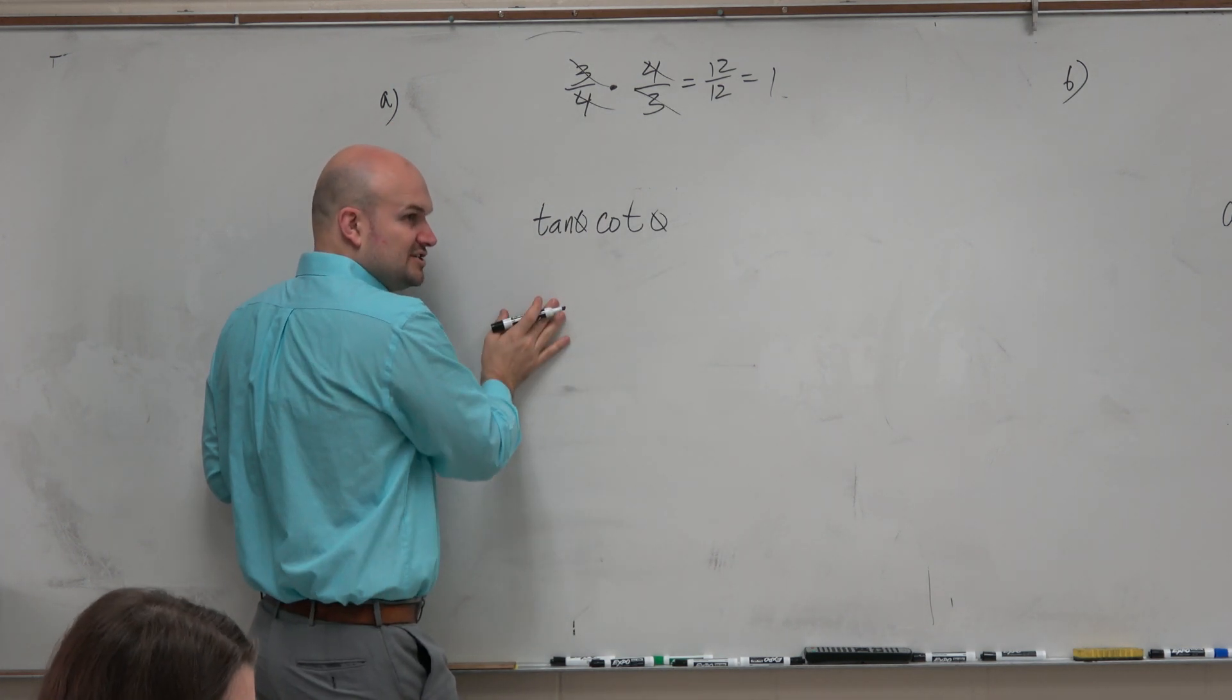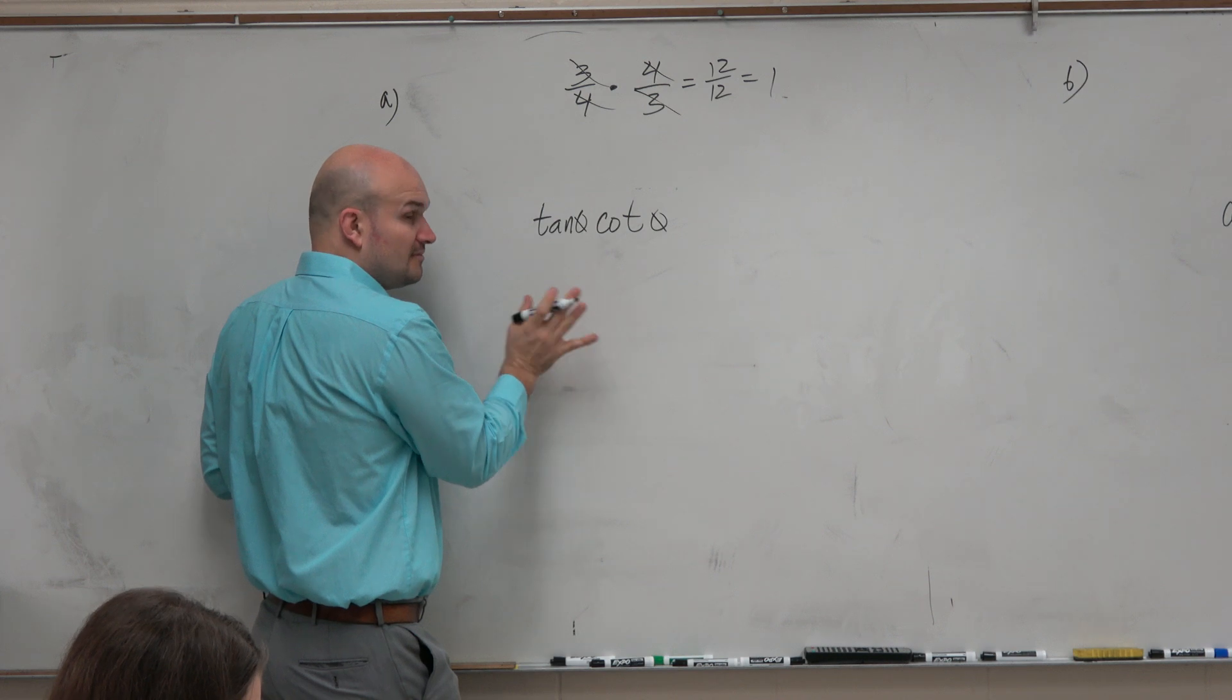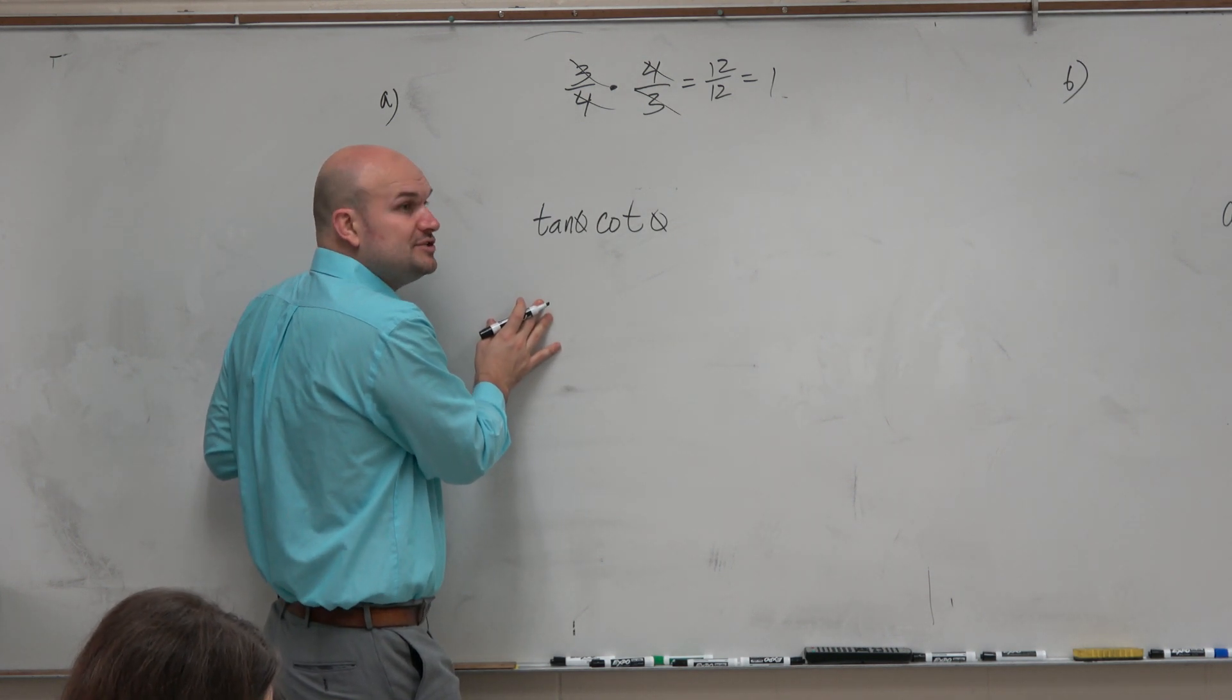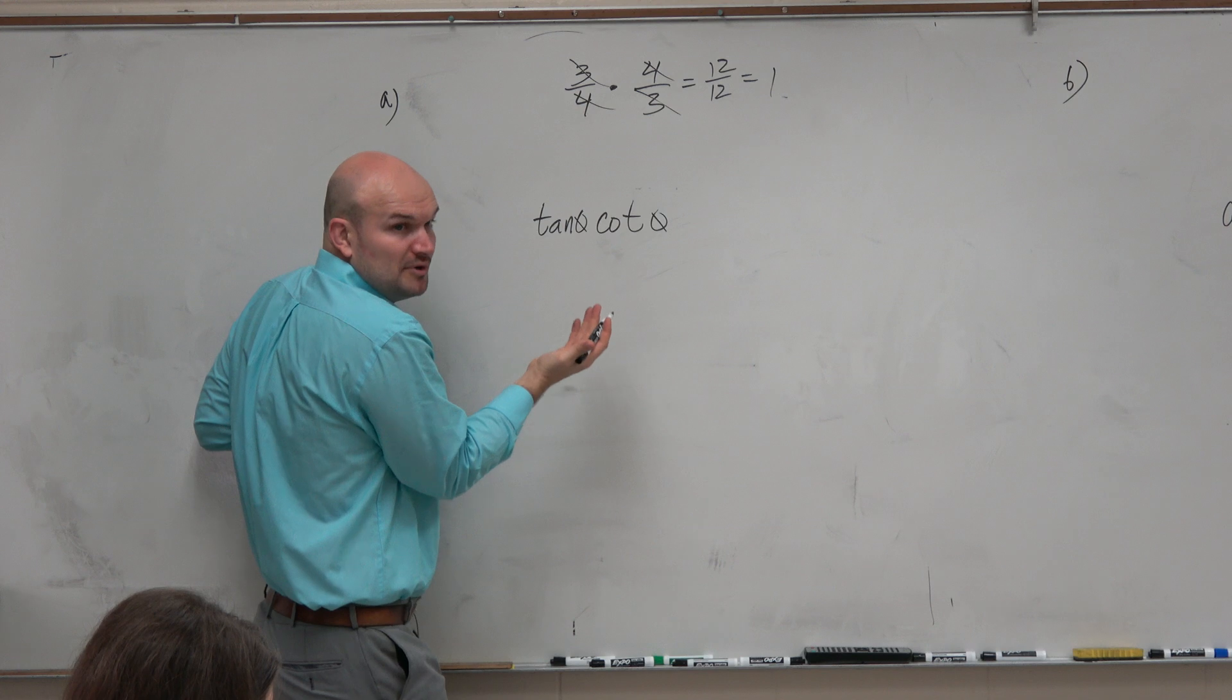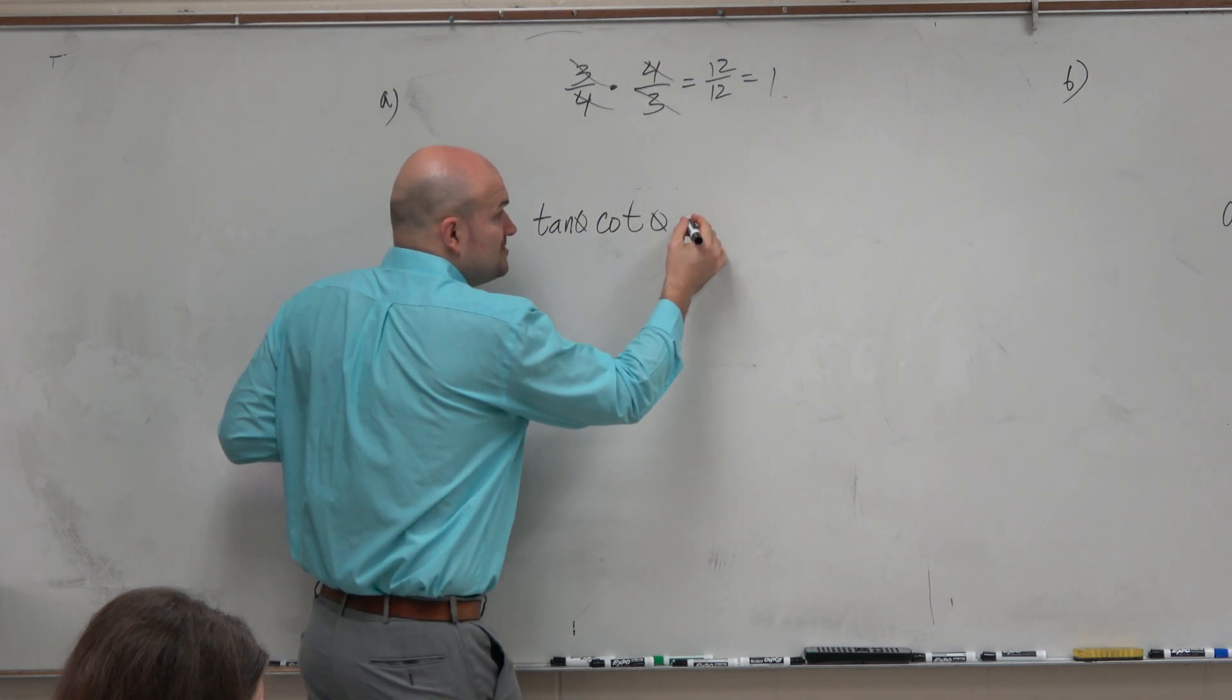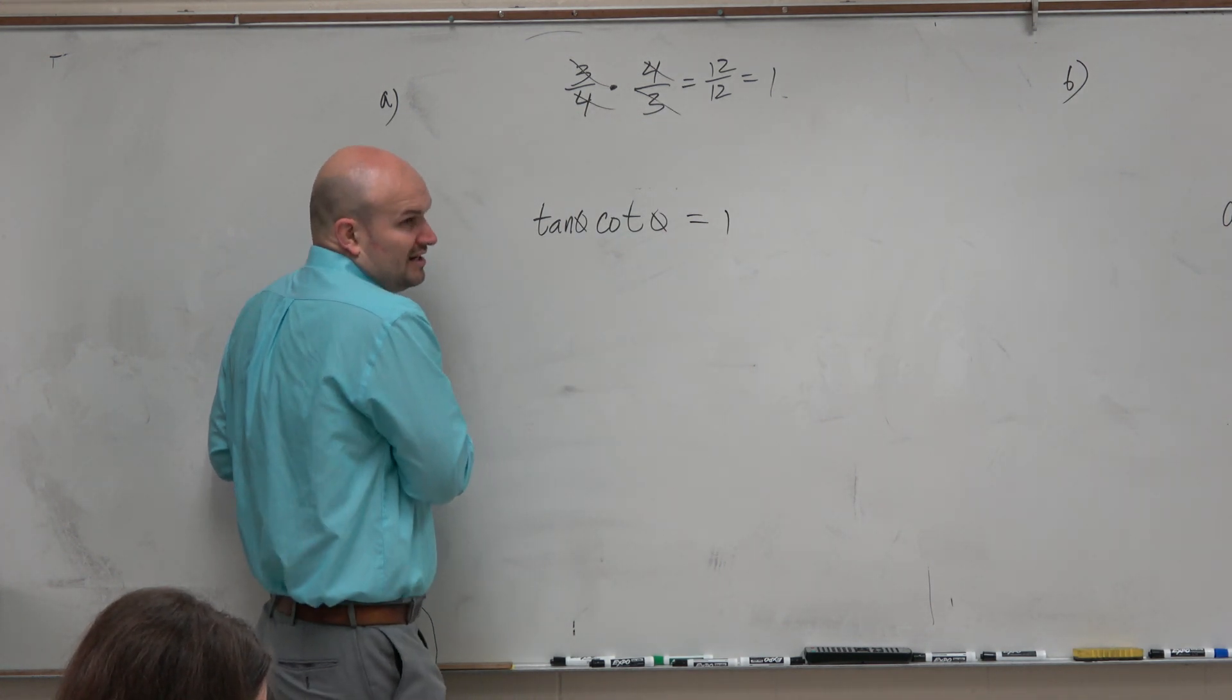Well, it's just tangent and cotangent. It doesn't really help us out. But there's a couple different ways we can look at this, because we do know that tangent and cotangent are reciprocals of one another. So just based on that knowledge, I could set them equal to 1.